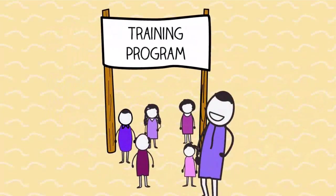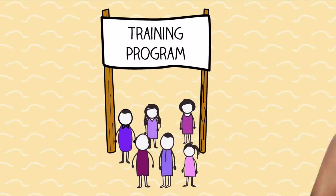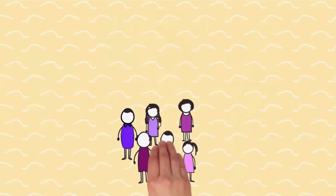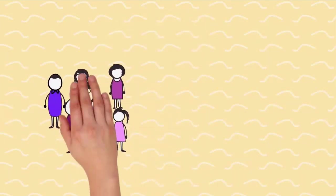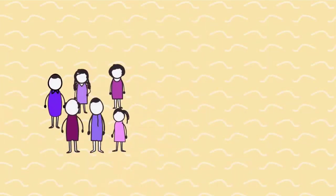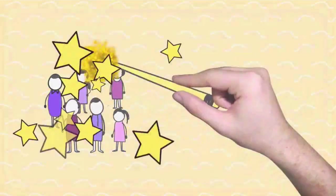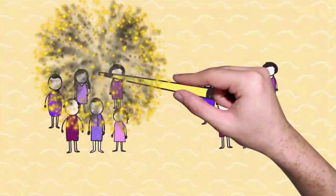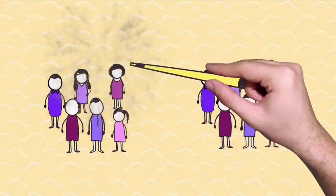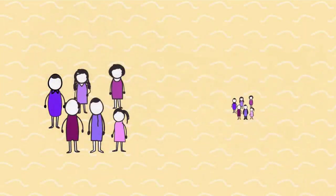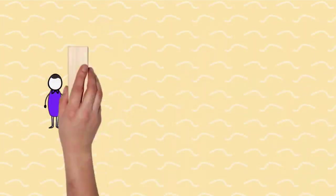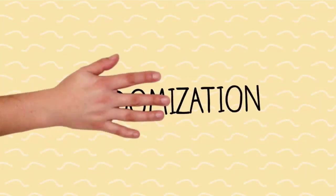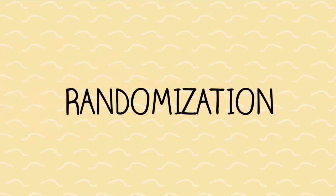We need to know what would have happened to the same group of people if they hadn't received the program. Well, that's possible if we could clone people, which we can't. So we need to do something called randomization.